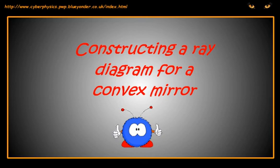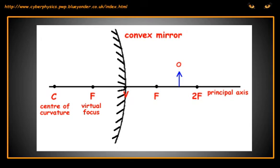Constructing a ray diagram for a convex mirror. We use three rays to pinpoint the image on the diagram, just as we did with the concave mirror.